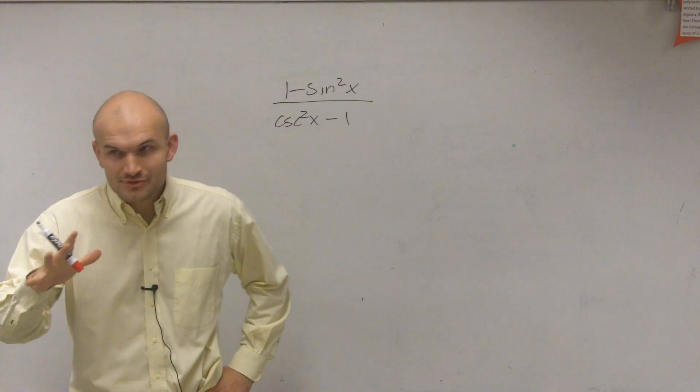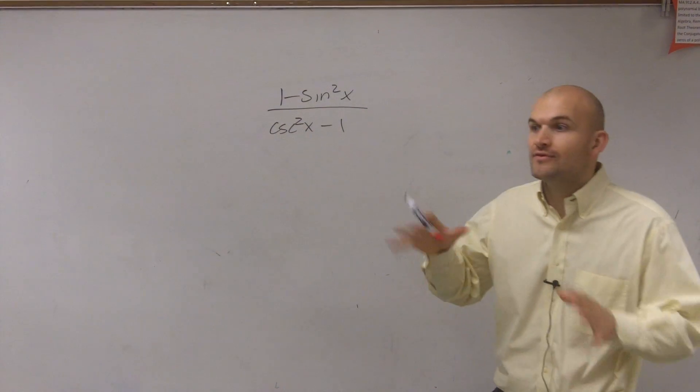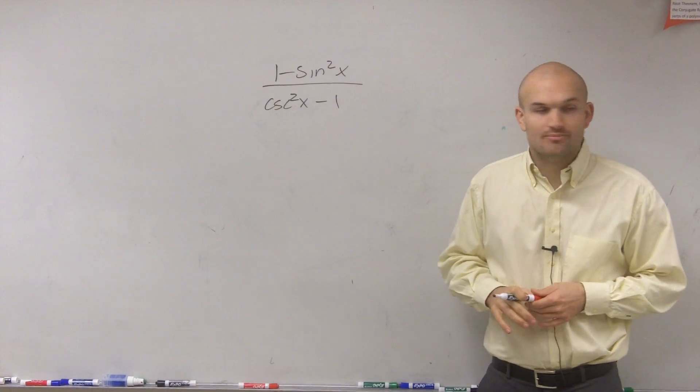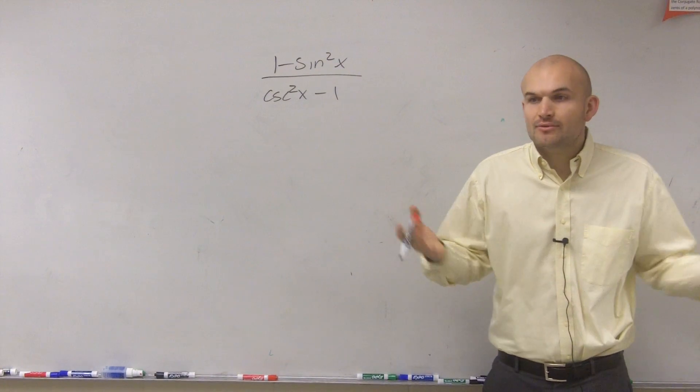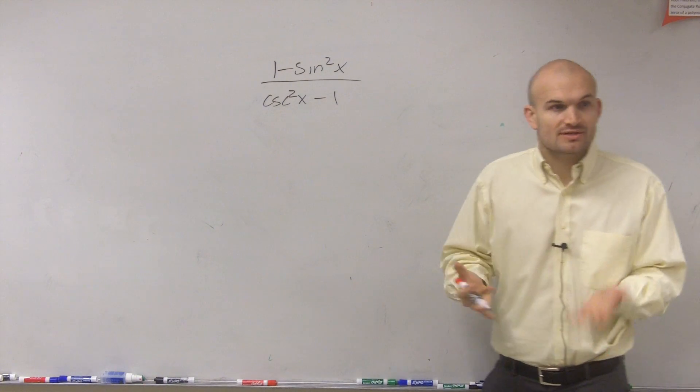Anytime you see a trigonometric function squared, automatically think to yourself I might want to or might need to use the Pythagorean identities. Same thing like whenever you see a right triangle, you know you can apply the Pythagorean theorem. That's something you should always think about.